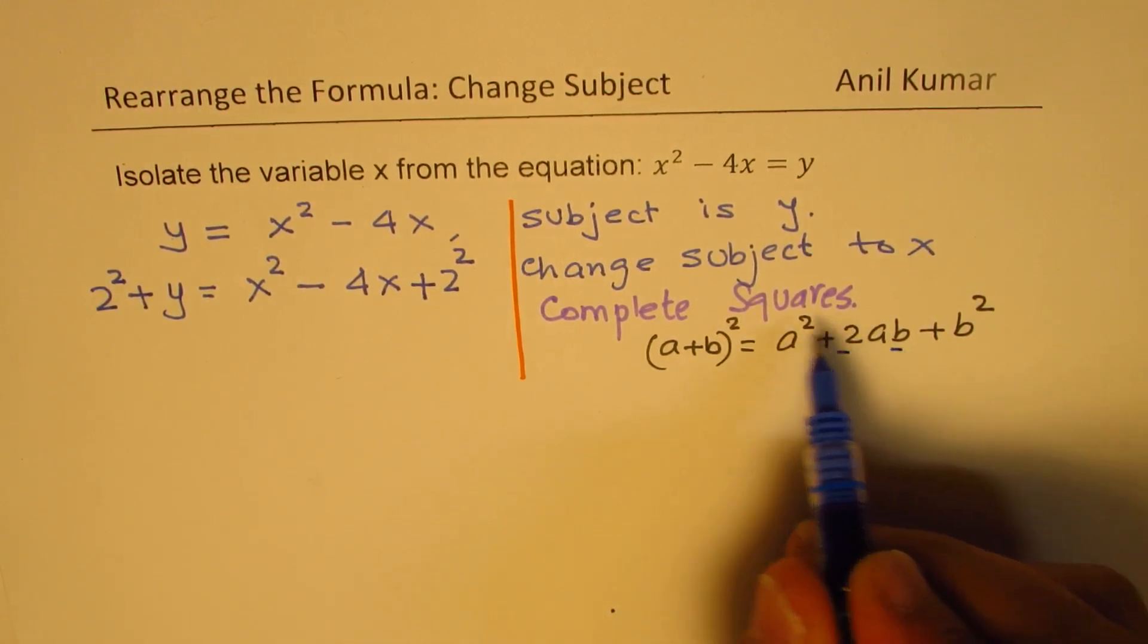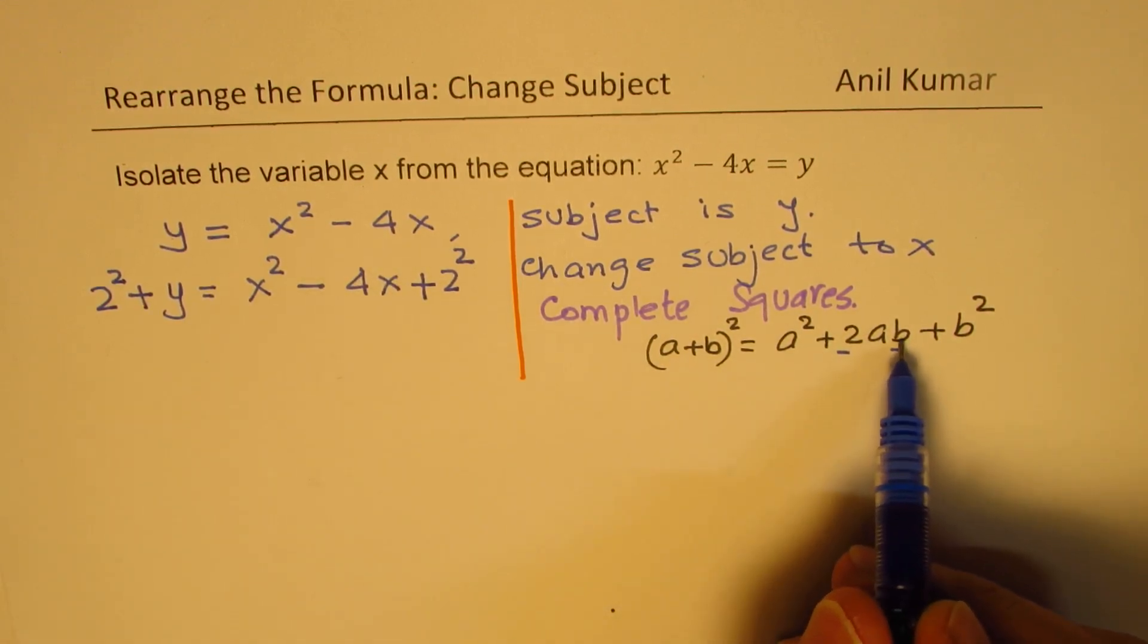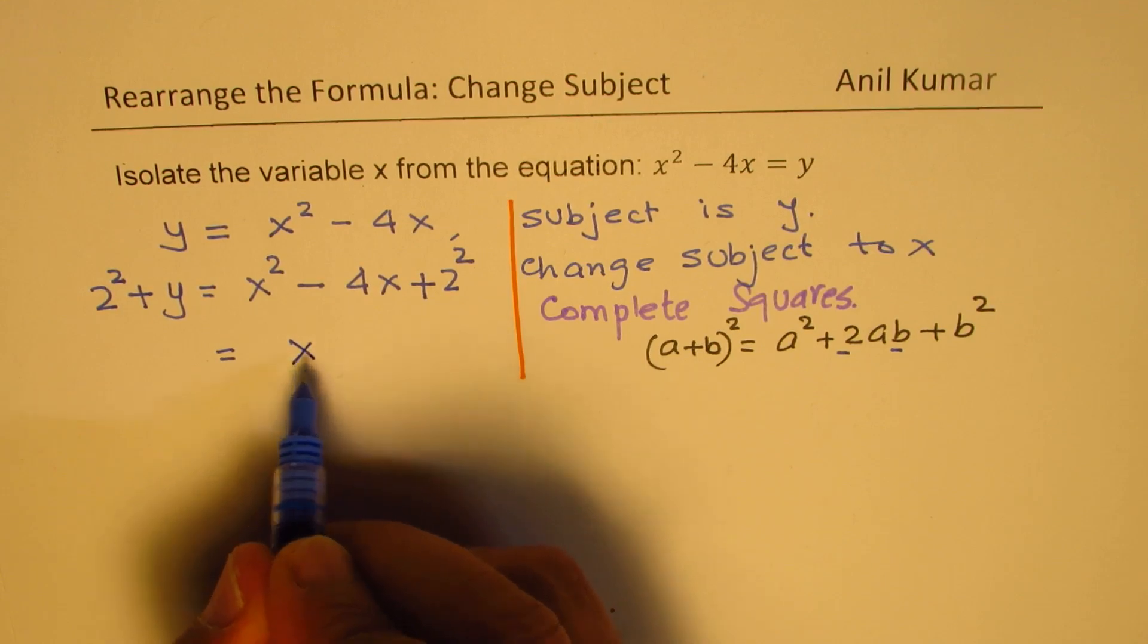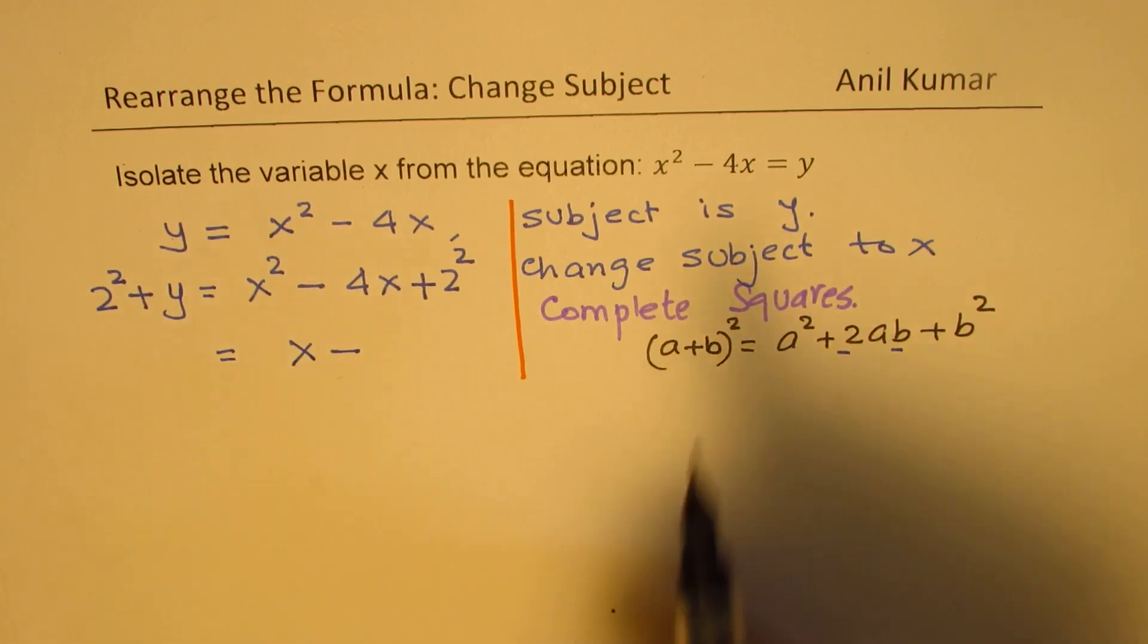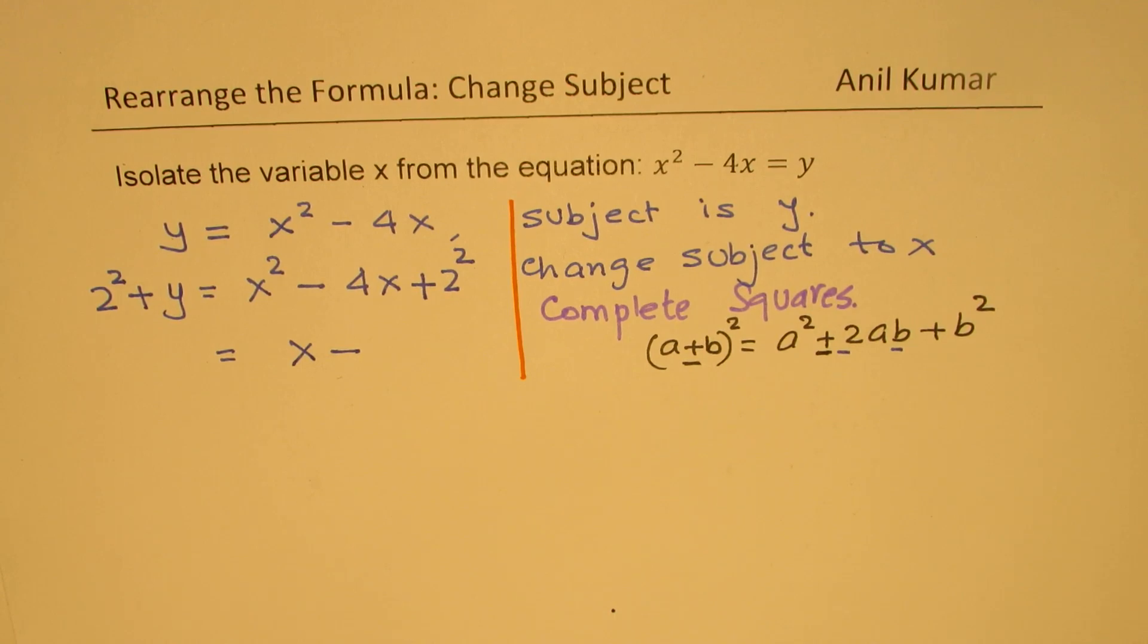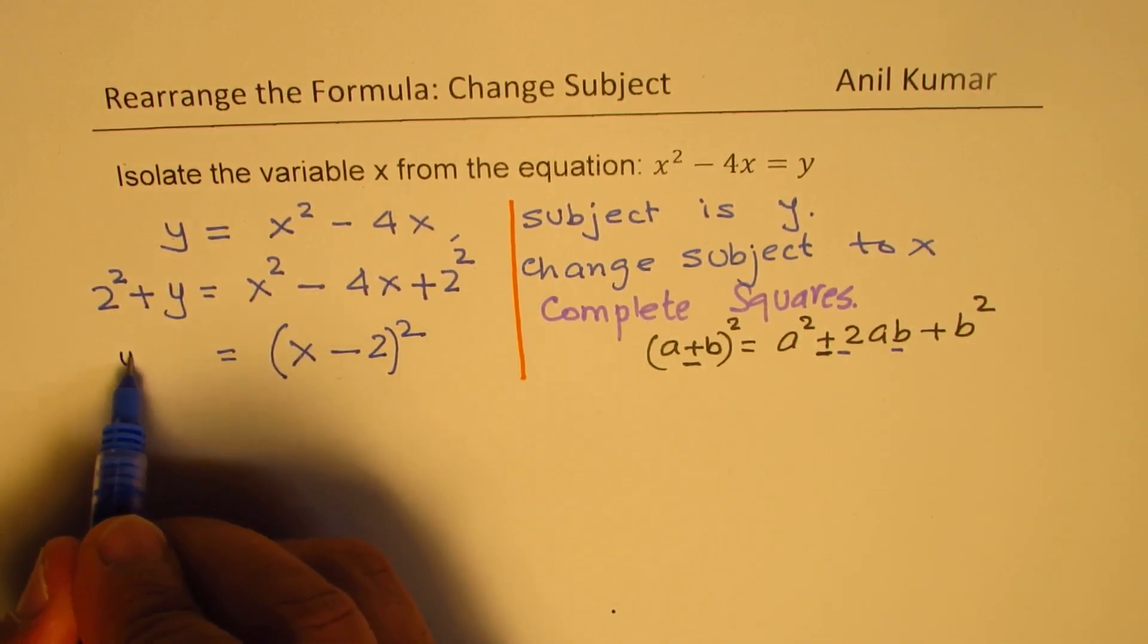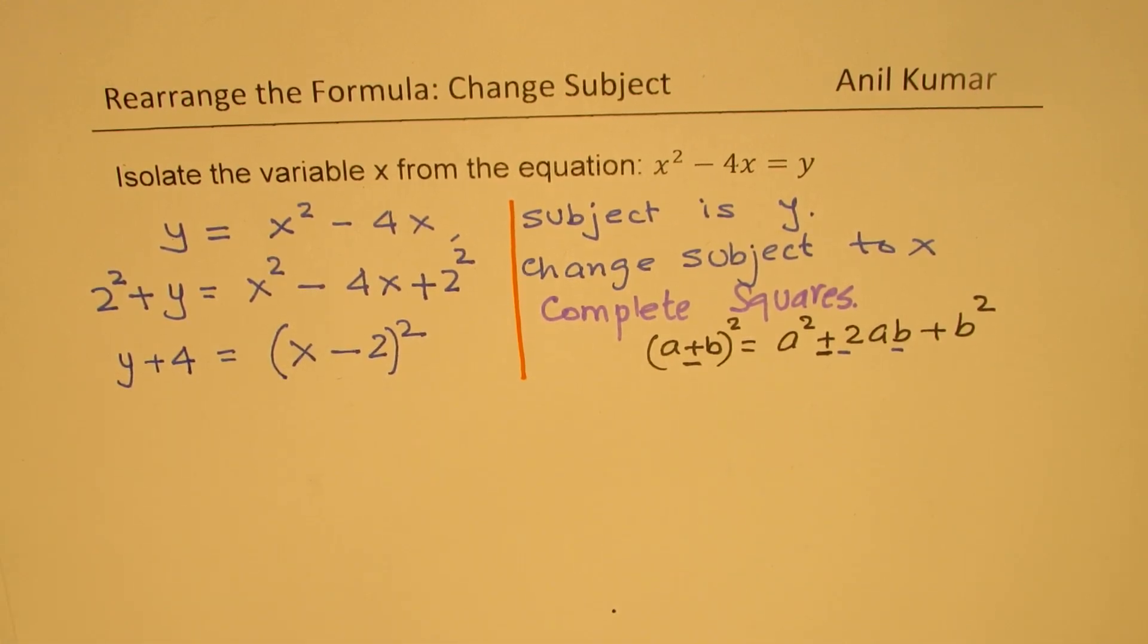The idea here is, see 2ab term. So half of 4 becomes b, and square of that is b squared. Now, if you compare with this, I could write this as x minus 2 whole square. And on this side, we get y plus 2 square. I'm writing that as 4.